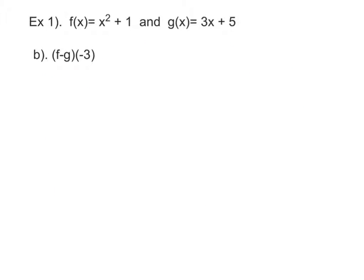Okay, we're going to keep using the same two functions and do a couple more examples. So let's look at this first one, F minus G of negative 3. So when you go to plug this in, you are going to take negative 3 squared, because that's your F of X function, plus 1, minus 3 times negative 3 plus 5.